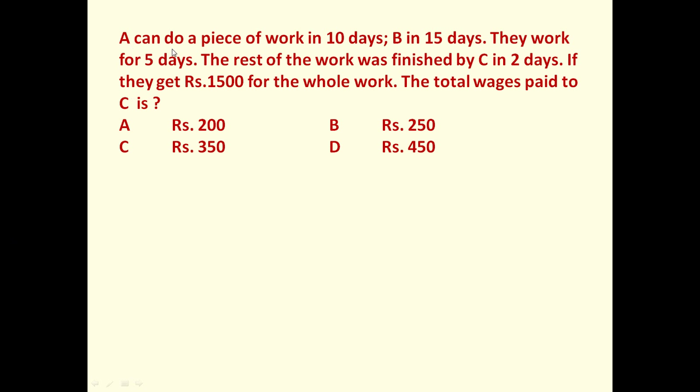Here the given problem is: A can do a piece of work in 10 days, B in 15 days. They work for 5 days. The rest of the work was finished by C in 2 days. If they get rupees 1500 for the whole work, the total wages paid to C is?